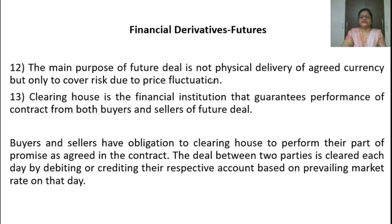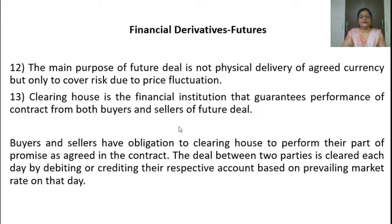The main purpose of a future deal is not physical delivery of the agreed currency but only to cover risk due to price fluctuation. They don't actually want the foreign currency — they want to cover the risk of loss. The clearing house is a financial institution that guarantees performance of contract between both the buyer and seller of a future deal. Buyer and seller have an obligation to the clearing house to perform their part of the promise as agreed in the contract. The deal between two parties is cleared each day by debiting or crediting their respective accounts based on the prevailing market rate on that date.